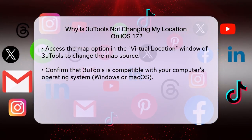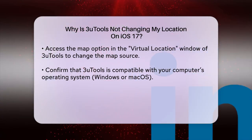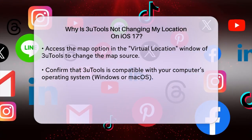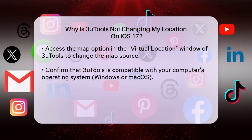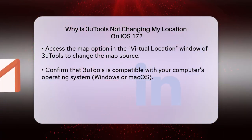To do this, launch 3uTools, go to the Virtual Location window, click on the Map option at the bottom right corner, and select Google Map from the drop-down list.